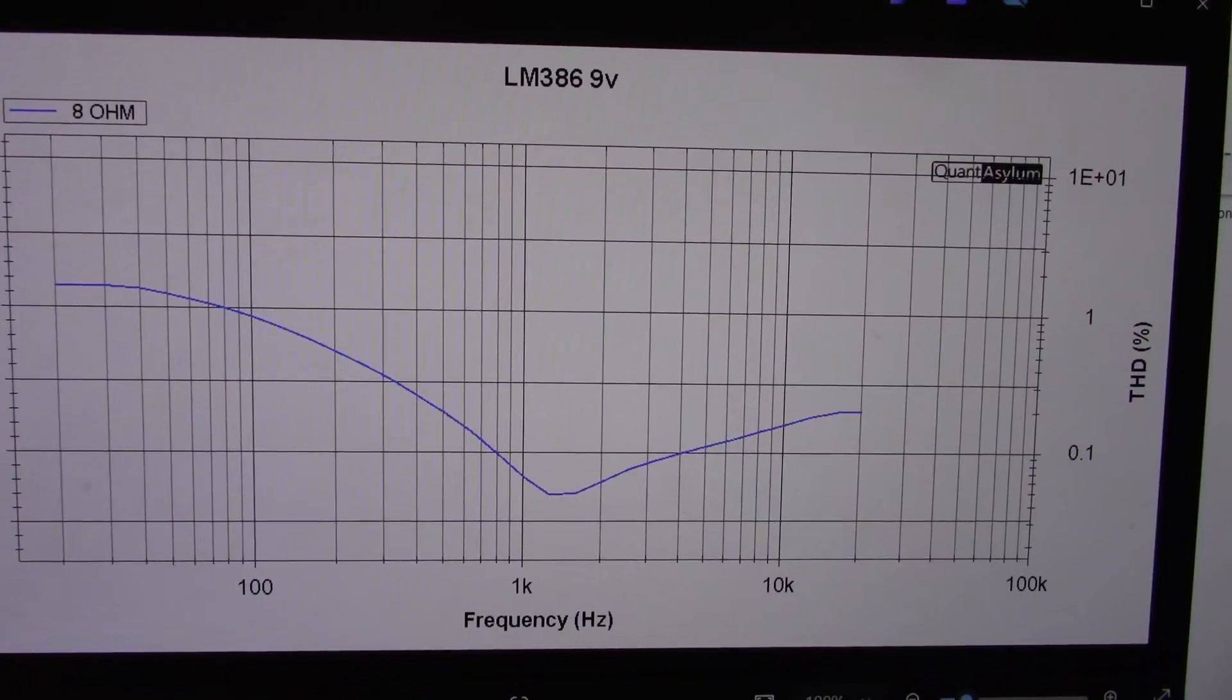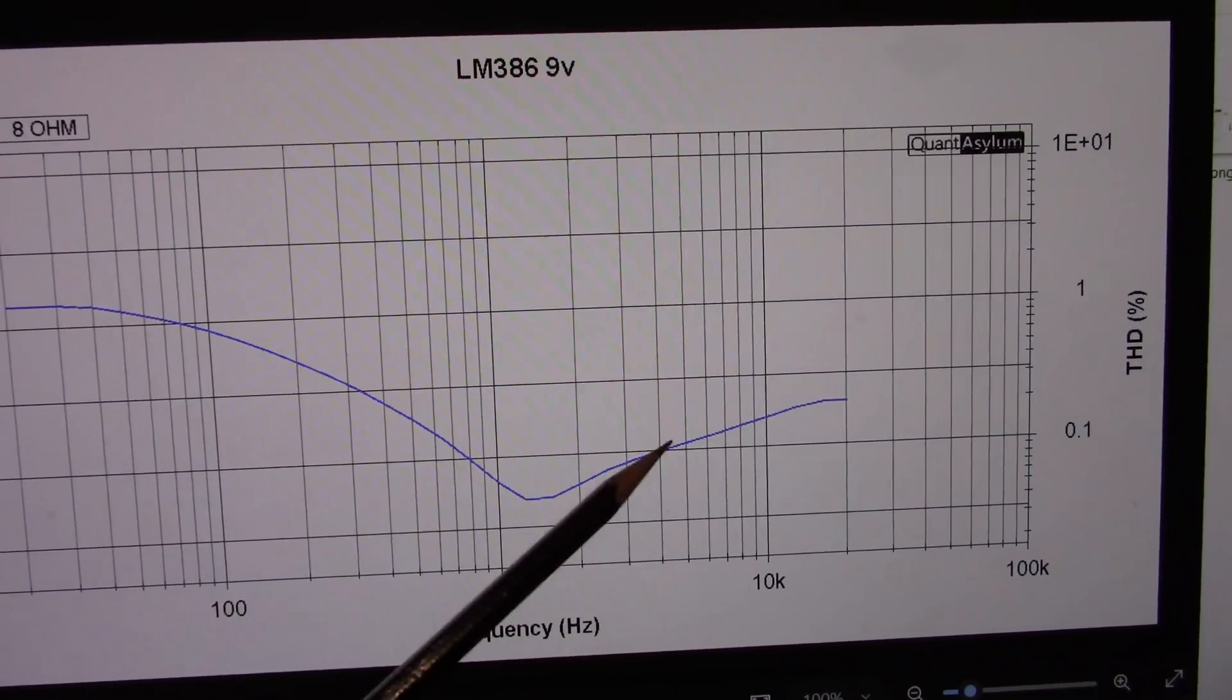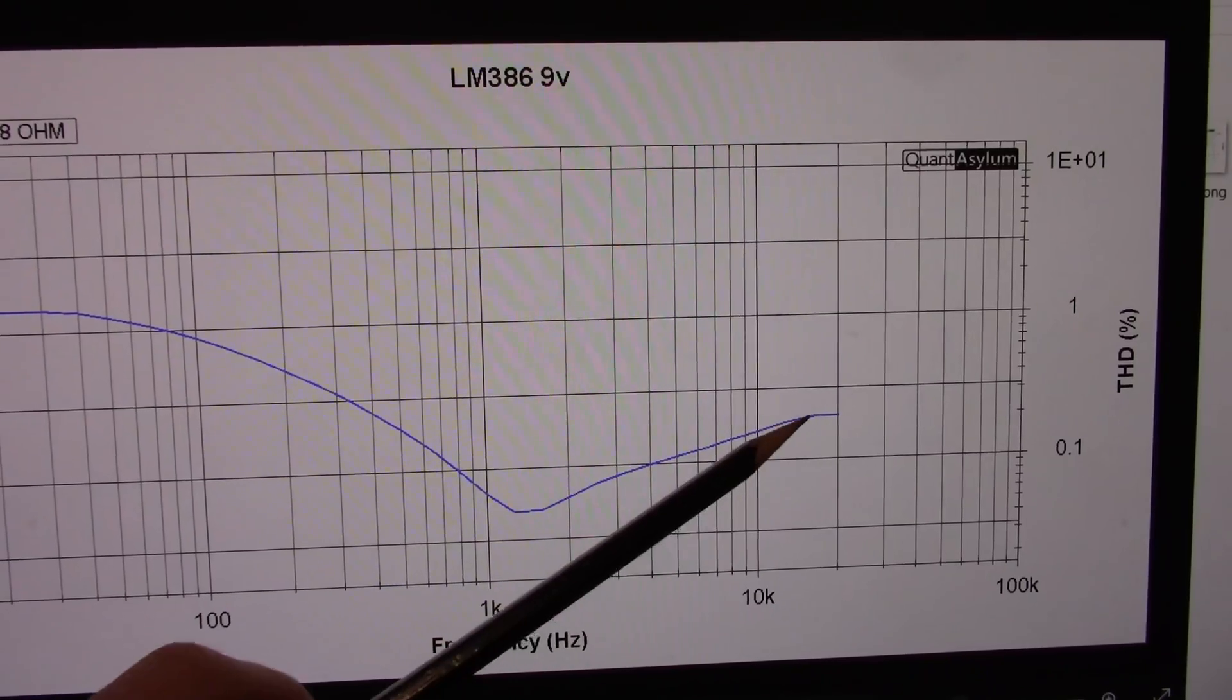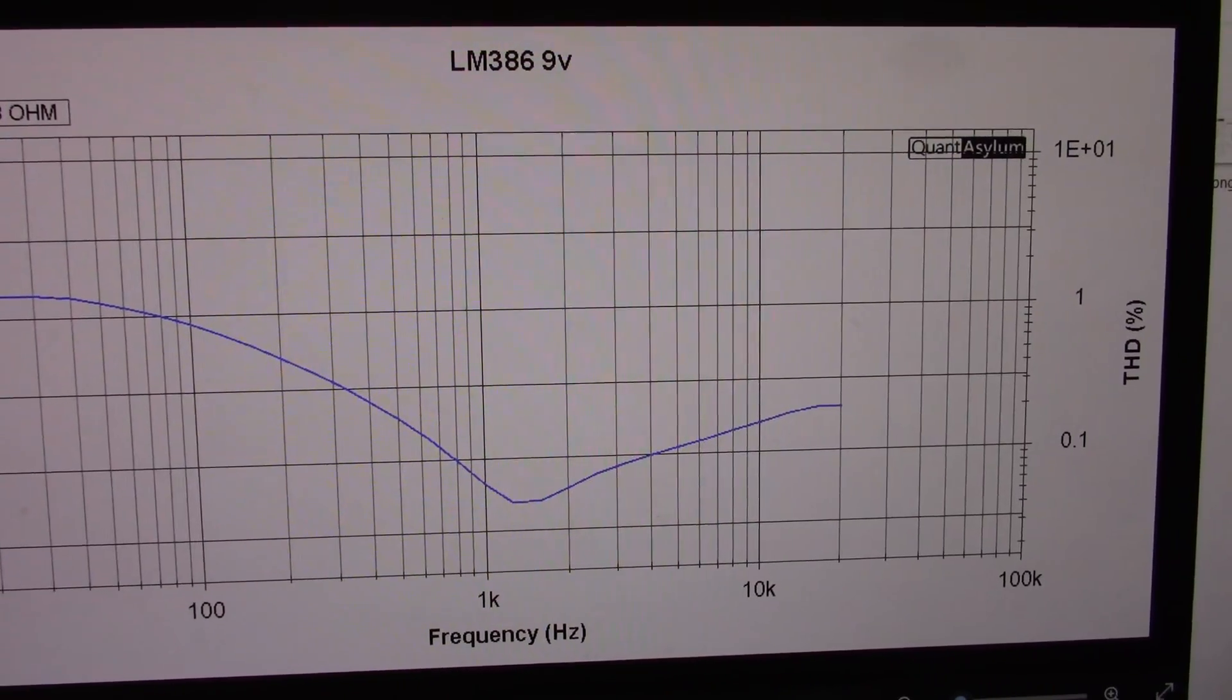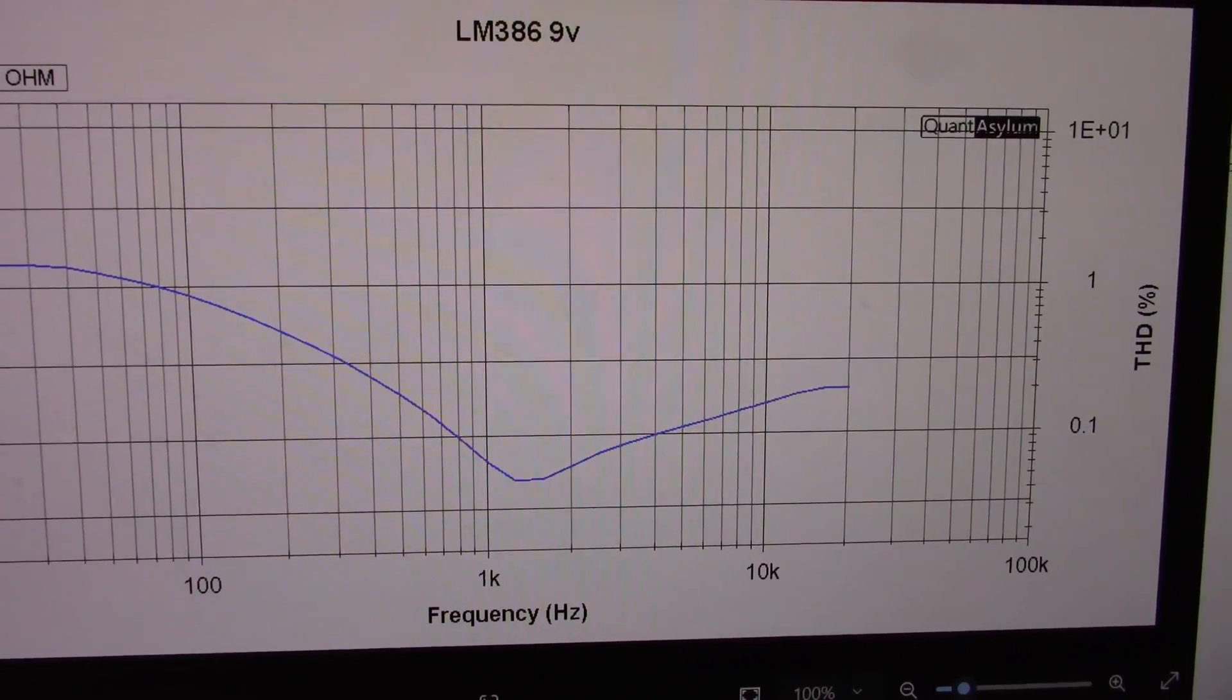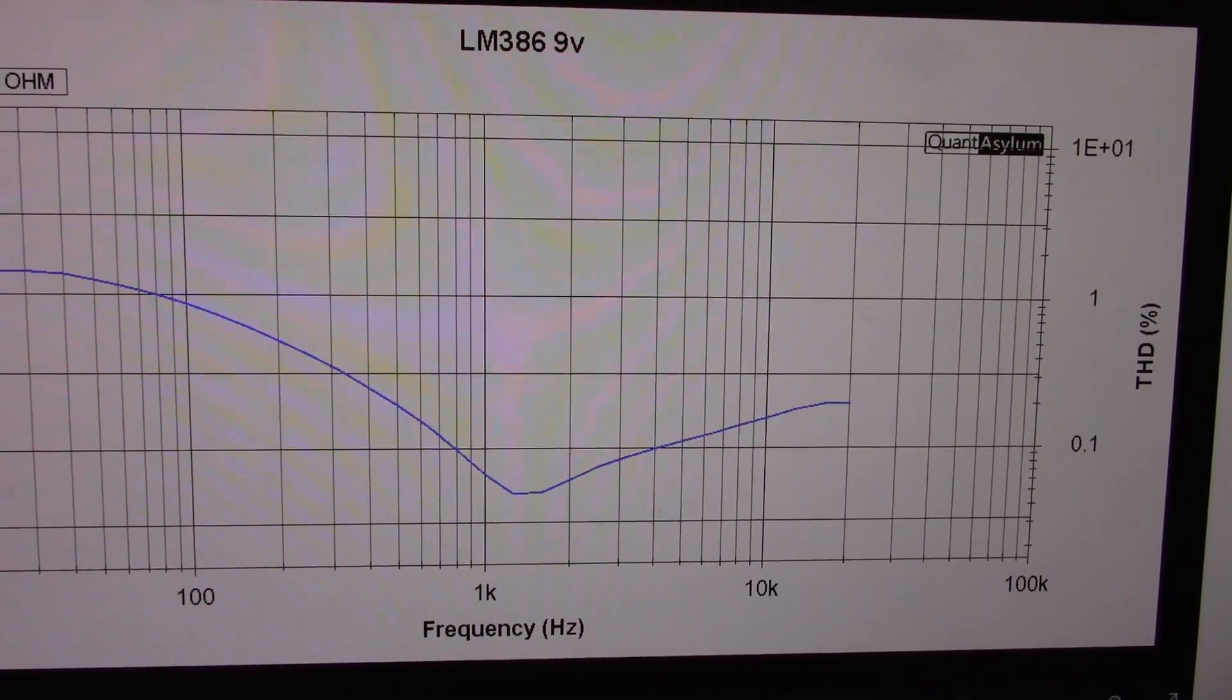Comparing with the LM386, had a similar distortion at lower frequencies. But at higher frequencies, it stayed pretty low, only going to 0.2%. So actually, that's a bright spot for the LM386. Its distortion stayed low at higher frequencies. Though at those levels, the harmonics would be out of the range of hearing, so doesn't really matter too much, I guess.